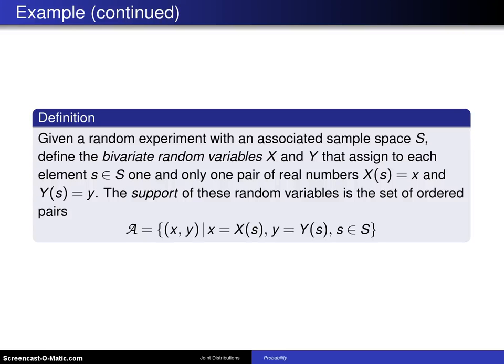Here's the definition of bivariate random variables. Keep in mind here that there is one random experiment, just like before, but this time there are two measurements that are being made, X and Y. X could be, for example, cholesterol level; Y could be blood pressure.